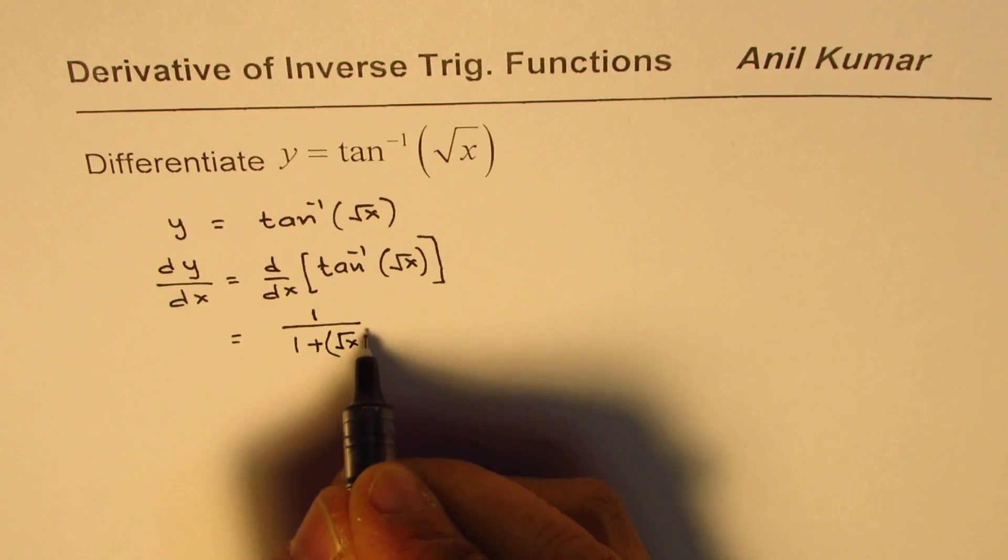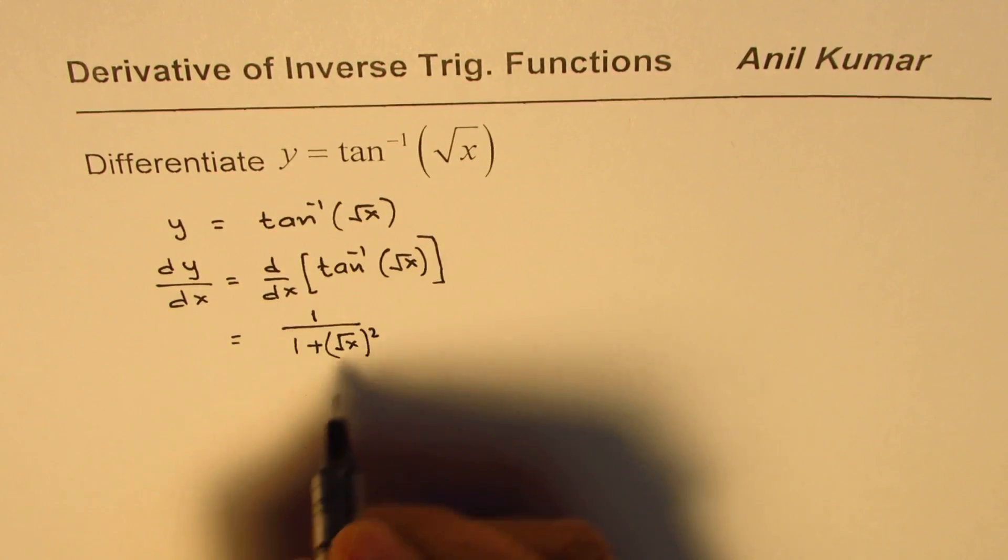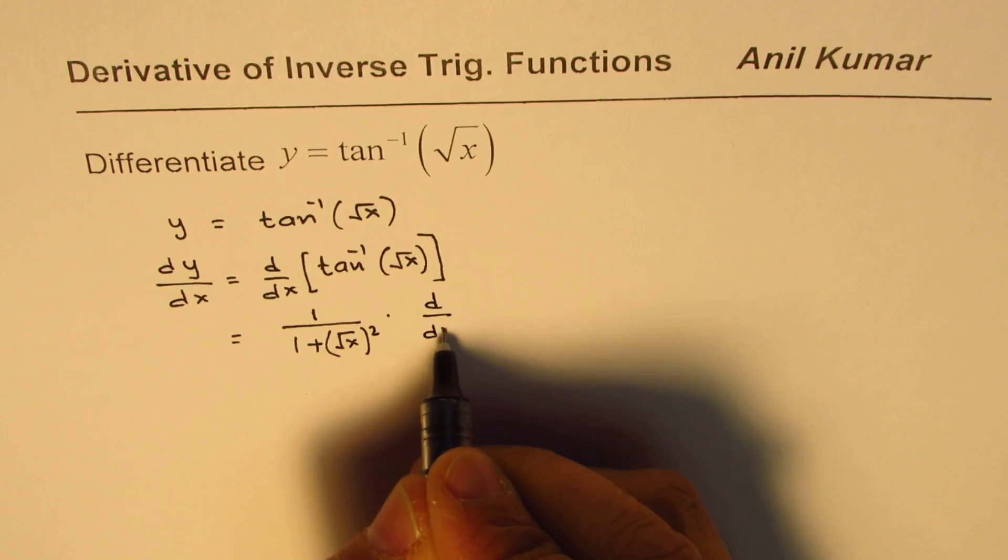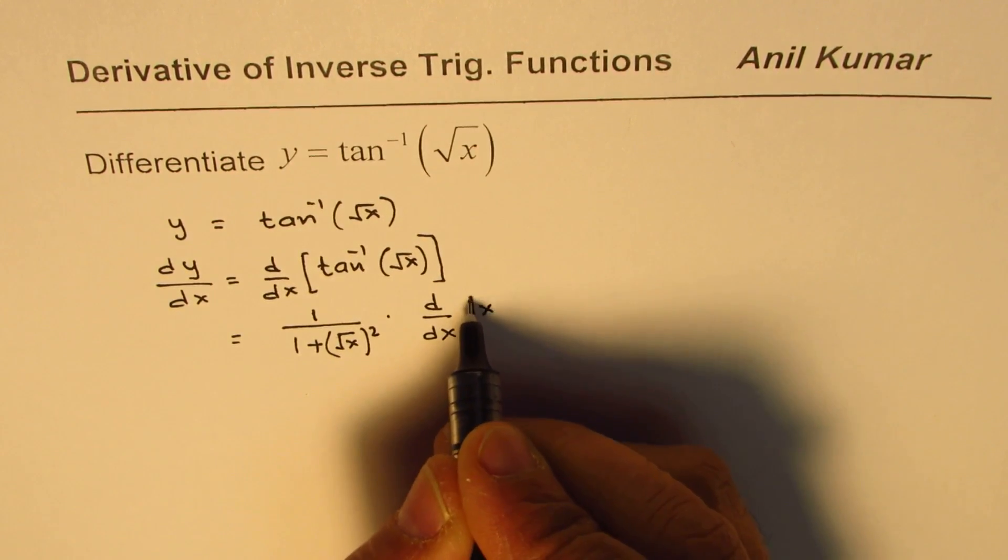So square root of x whole squared, that is x squared, times the derivative of the inside function, which is d/dx of square root of x.